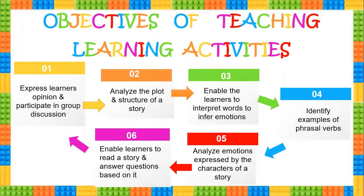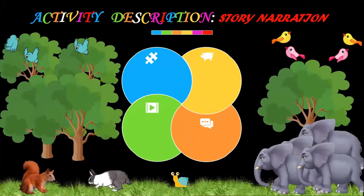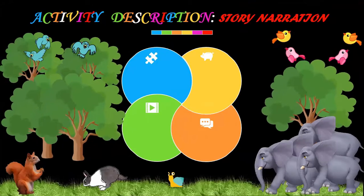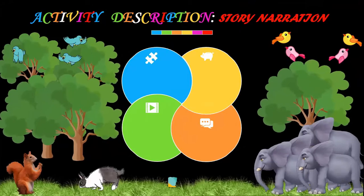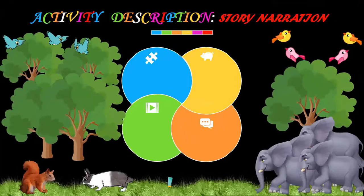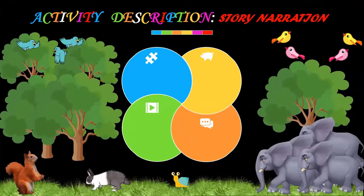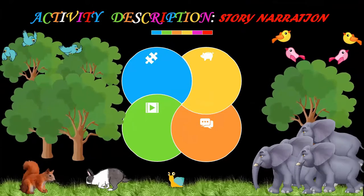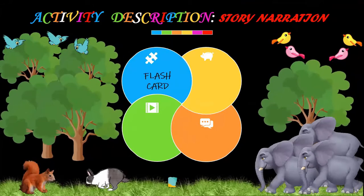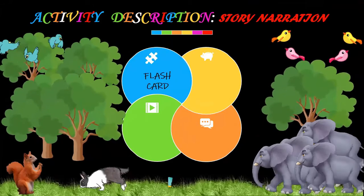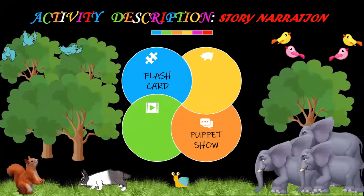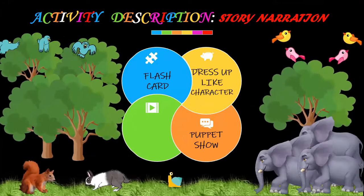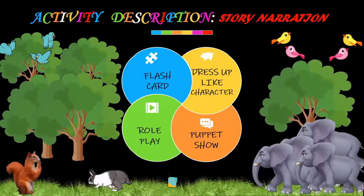Our objectives are interconnected and we aim for all kids to gain clear knowledge about the chapter. Moving on to our activity description — story narration — students are divided based on their talents. Station 1 is given Flashcard activity, Station 2 is Puppet Show, Station 3 is Dress Up Like Character, and Station 4 is Role Play.